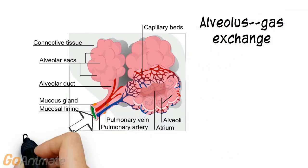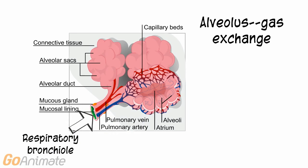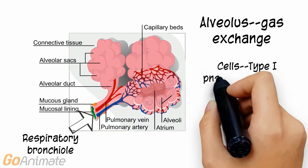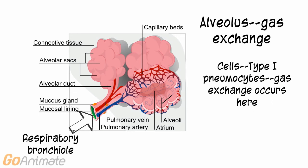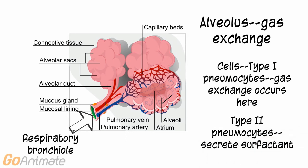Air from the tiny respiratory bronchioles reaches the alveolar ducts and flows into the alveolus, the functional unit of the lung where gas exchange occurs. The alveolus contains type 1 pneumocytes, where gas exchange occurs. It also contains type 2 pneumocytes that secrete surfactant. Surfactant is a substance that reduces surface tension to keep the lungs from collapsing.